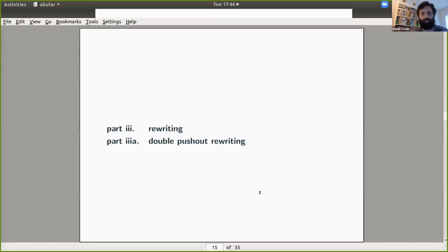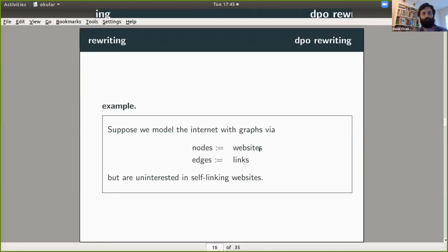So I brought up this word rewriting a number of times now, and so I should probably tell you a little bit about how the formalism works. There's a number of formalisms in rewriting. I'll specifically be talking about double pushout rewriting. And I guess I'll start off with an example. So suppose that we wanted to model the internet with graphs. And we would take the nodes of the graph to represent websites and the edges of this graph represent links between websites.